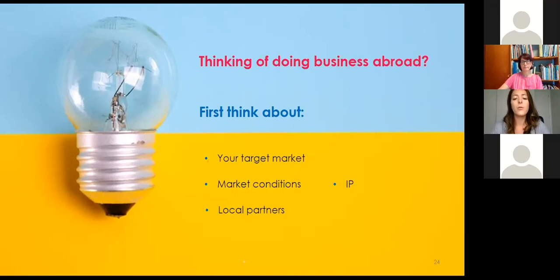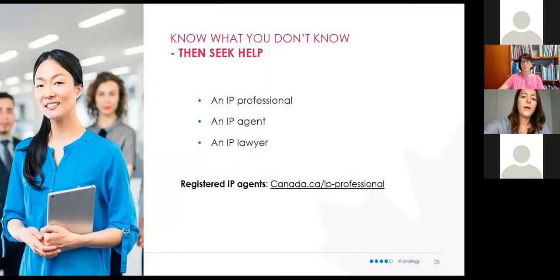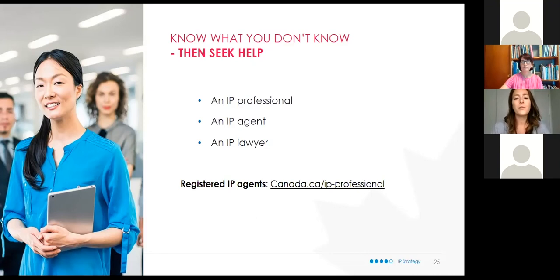Know what you don't know, then seek help. After doing your preliminary research, it is recommended you contact an IP professional — an IP agent or an IP lawyer. There is a link provided on this slide where you can find registered IP agents. These are professionals who can help you develop your IP strategy and take the next steps in your IP journey. Start with the basics: contact CIPO customer support and then speak with an IP advisor. They can then recommend that you seek help from an agent or lawyer.